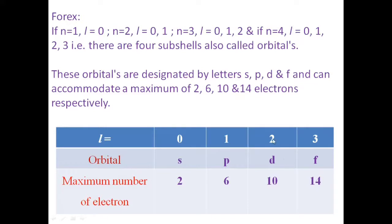If L is equal to 2, that orbital is the D-orbital and the maximum number of electrons is 10, so D has 5 orbitals. If L is equal to 3, that orbital is the F-orbital and the maximum number of electrons in F is 14.